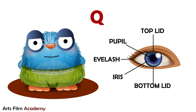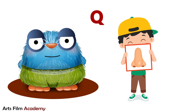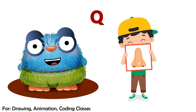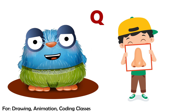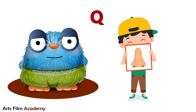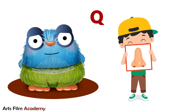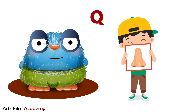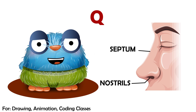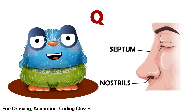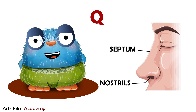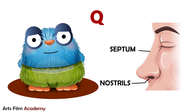Very good. Tell me about sense organ nose. Nose helps us to breathe and detect smell. Important parts: septum and nostrils are the important parts of the nose. Very good.